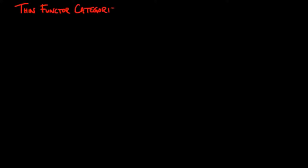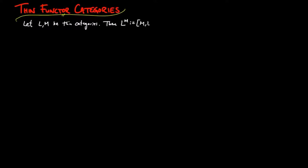In this section we look at thin functor categories. Let L and M be thin categories. Then L to the M, defined as the category of functors from M to L, is a thin category.